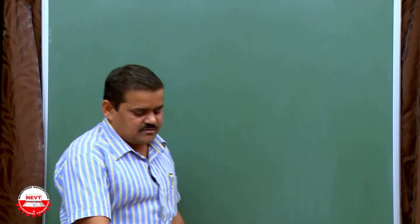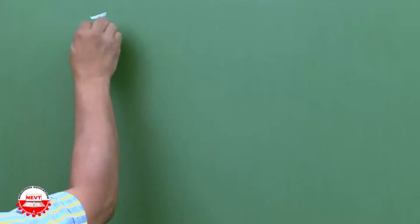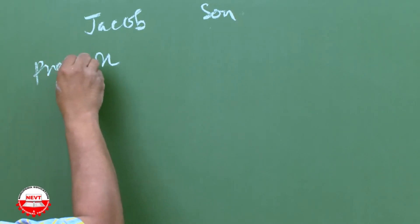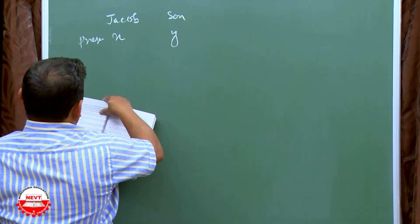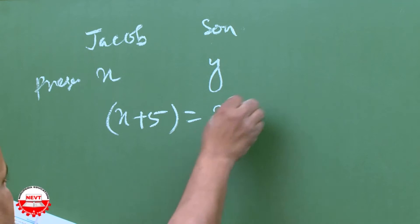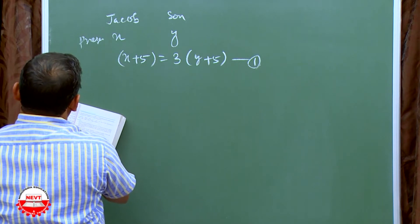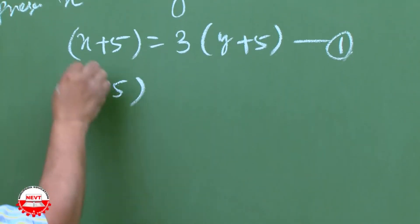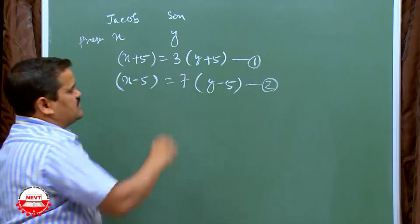The sixth part: 5 years hence, the age of Jacob will be 3 times that of his son. Let Jacob's present age be X and his son's present age be Y. Then X plus 5 is equal to 3 times (Y plus 5) — this is equation 1. Five years ago, Jacob's age was 7 times his son's: X minus 5 is equal to 7 times (Y minus 5) — this is equation 2. You can solve these easily.